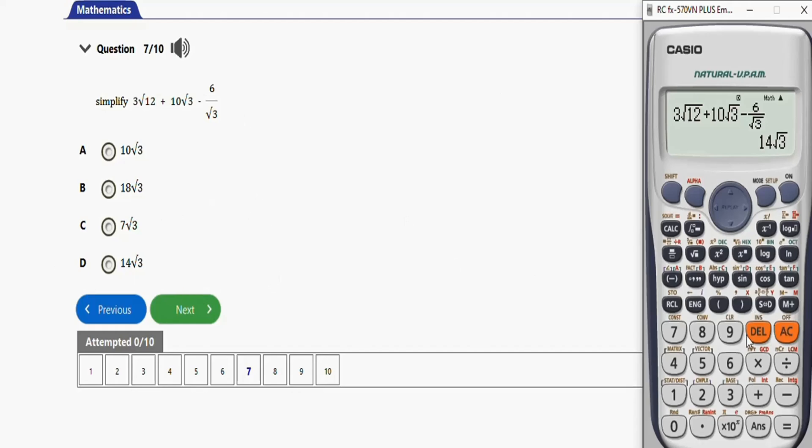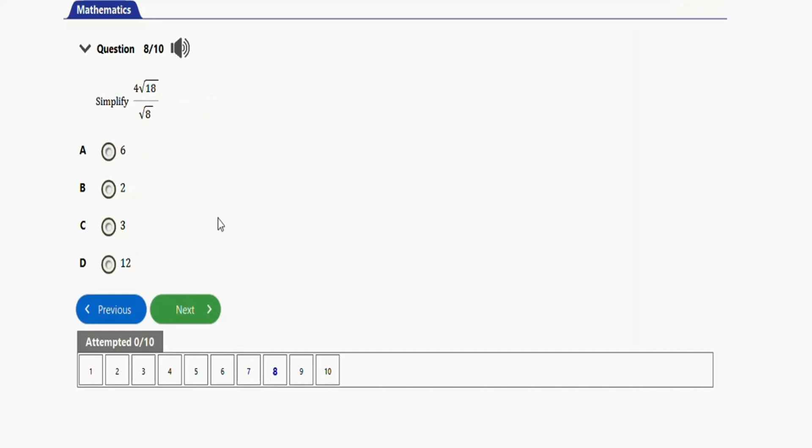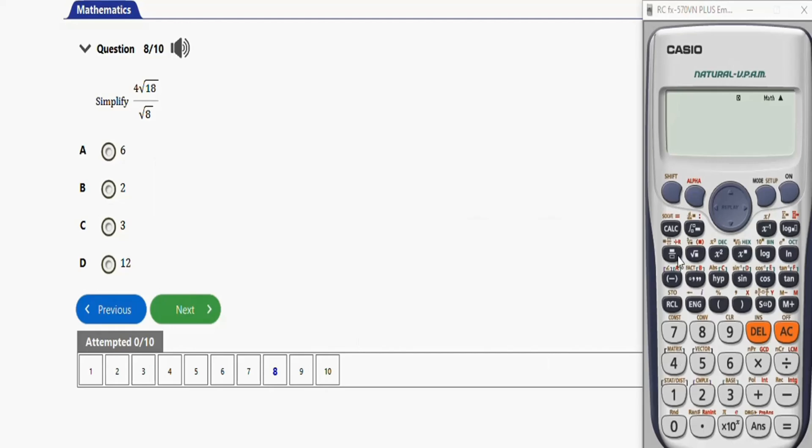You see this is very interesting. The next question, before you start, if you are new to this channel ensure that you are subscribed by hitting the subscribe button for more of these videos. Let's click calculator and punch this as well. For this question we have 4√18 over √8. Let's press equal, we have it to be 6.